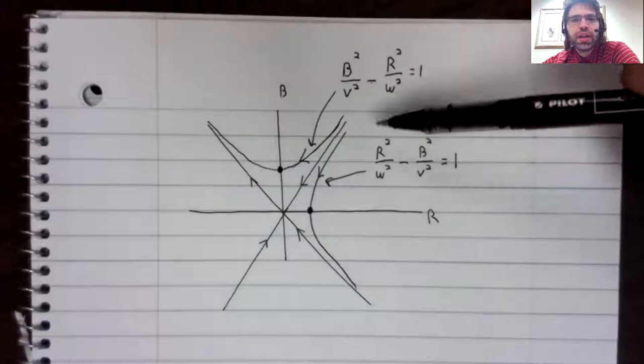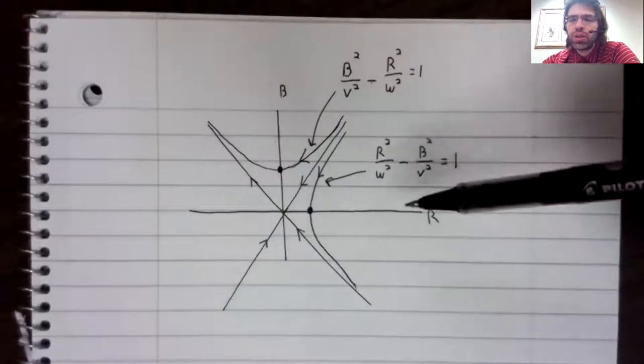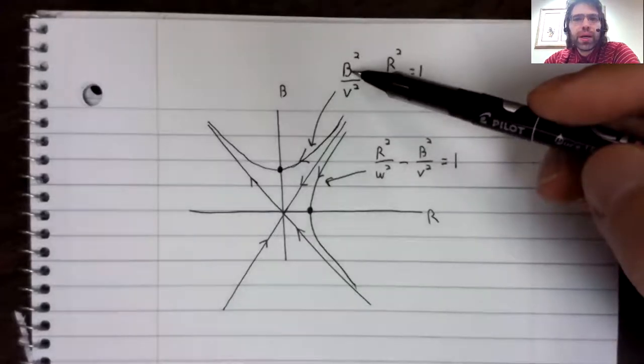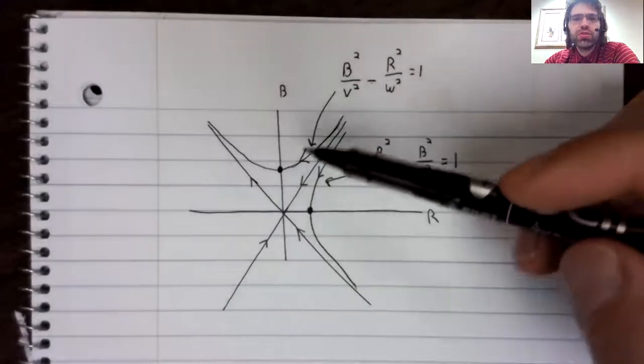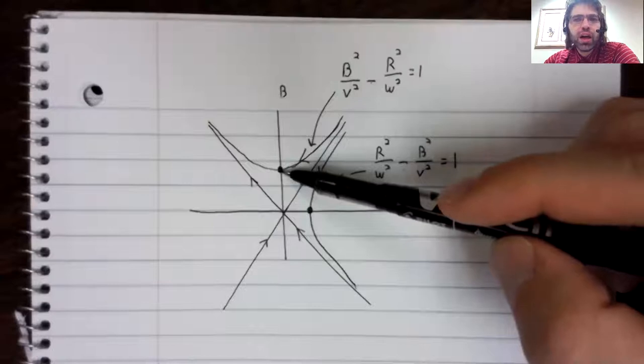And looking at the equation tells you the form of the hyperbola. If the B squared term is first, the vertex will be on the B axis. This represents Red Army being wiped out.